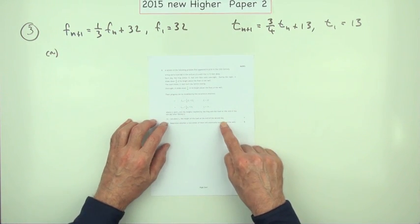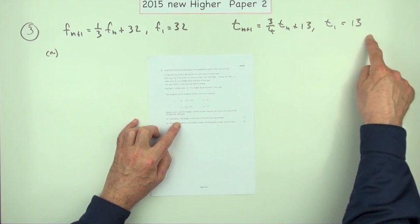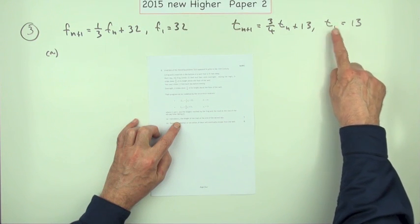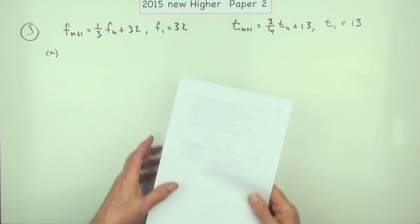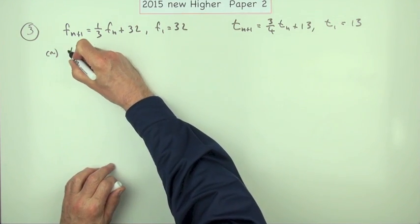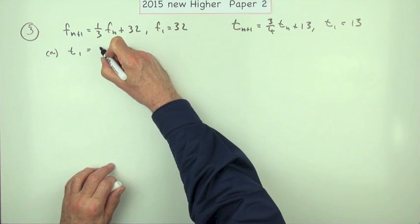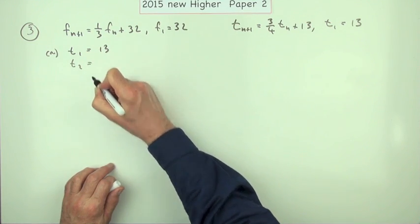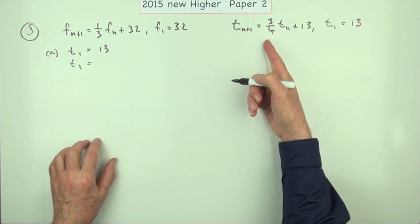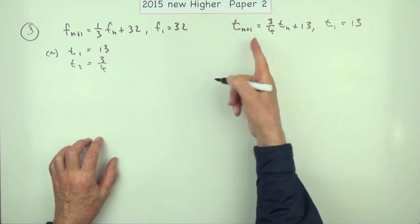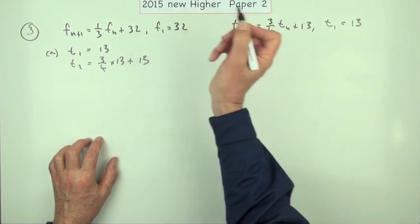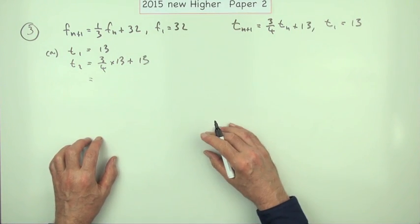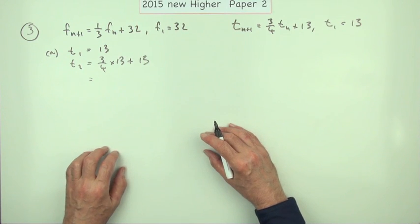For part A it simply says for the toad, given this recurrence relation, at the end of day 1 it got to 13 feet. What would it get to at the end of day 2? Well, the toad on day 2 would get to 3/4 of that previous day of 13 plus 13. It's a calculator paper so you can just press the buttons.